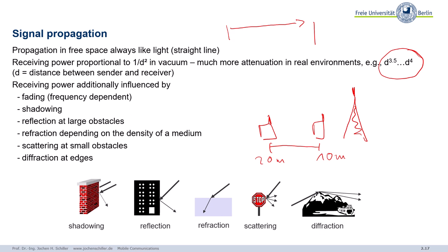So if you double the distance in vacuum, you have only a fourth of the signal strength and way less in real environments. Besides that, you have many more influences. You have different effects depending on the frequencies, fading effects depending on frequencies. I gave you the example, there's no sunlight shining through a concrete wall, but through a window made out of glass. Well, that's frequency depending on fading.